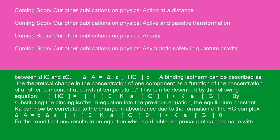H equals H0 times Ka times G0 divided by 1 plus Ka times G0. By substituting the binding isotherm equation into the previous equation, the equilibrium constant Ka can now be correlated to the change in absorbance due to the formation of the HG complex.